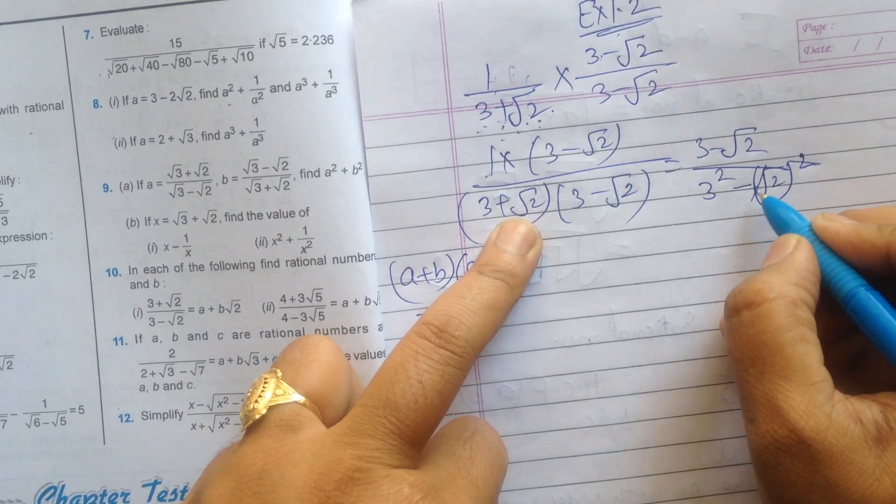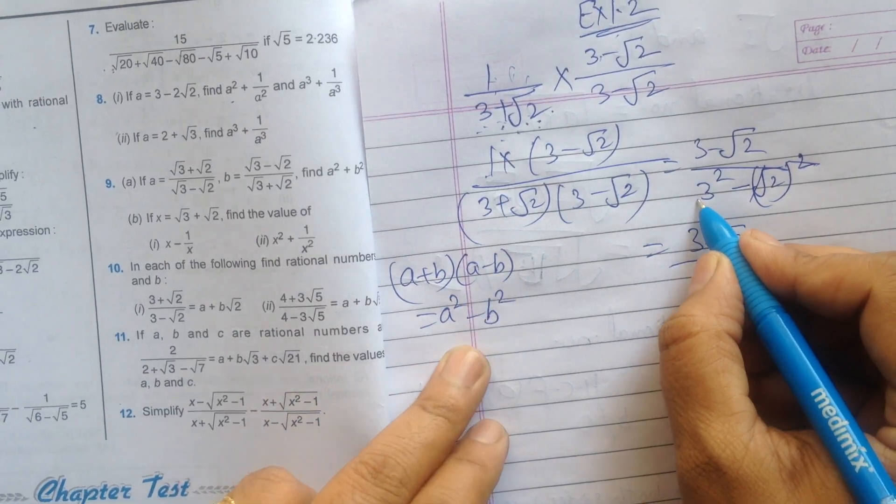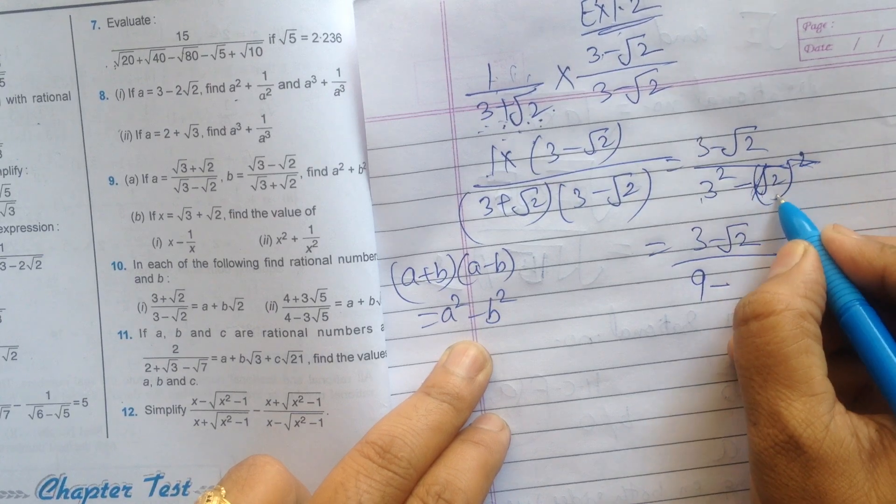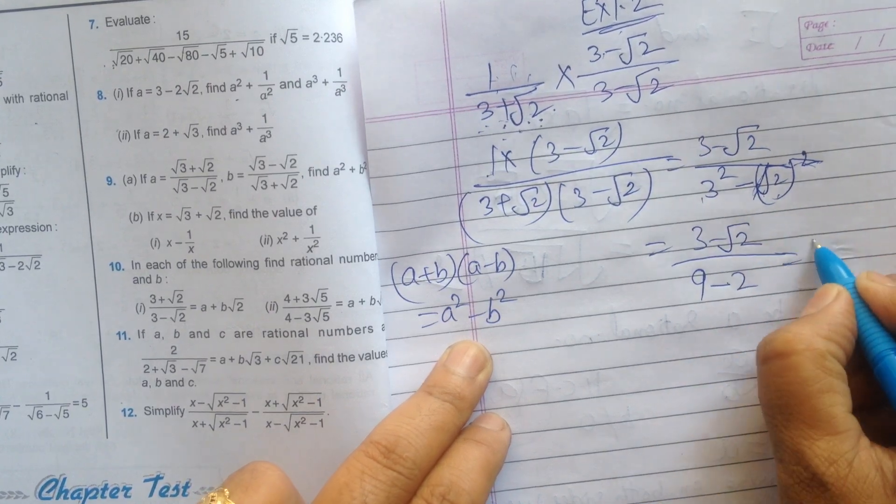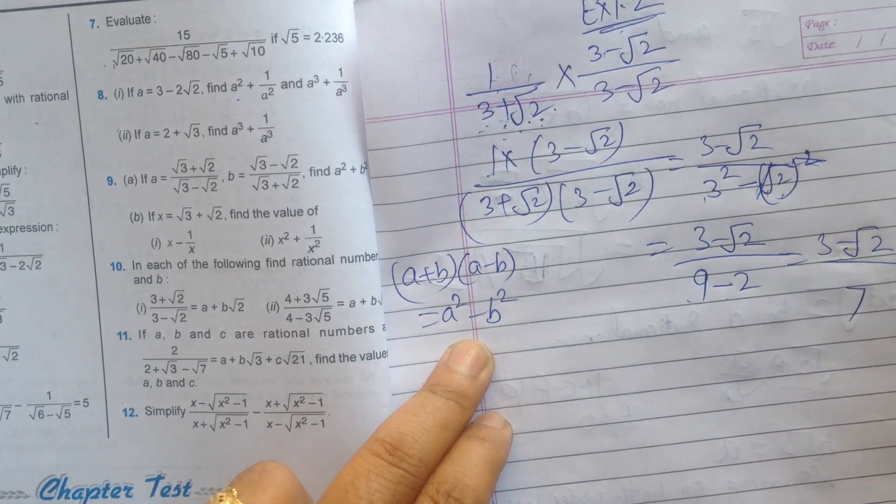This cancels with this. Now 3 minus square root 2 as it is. 3 squared is 9 and this square root is cancelled, so 2 is left. 3 minus square root 2 upon 9 minus 2 will be 7.